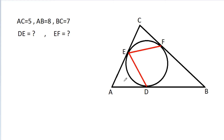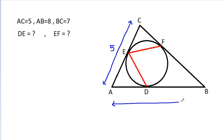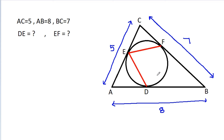In this video, we have been given a circle inside triangle ABC, where AC is 5, AB is 8, and BC is 7. We have to find DE and EF.